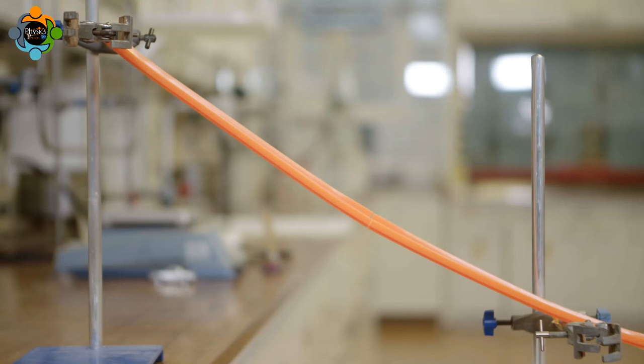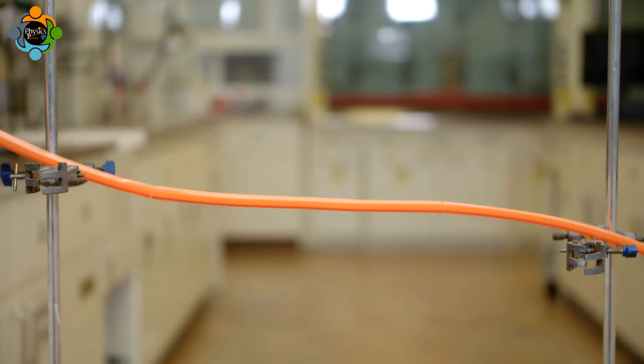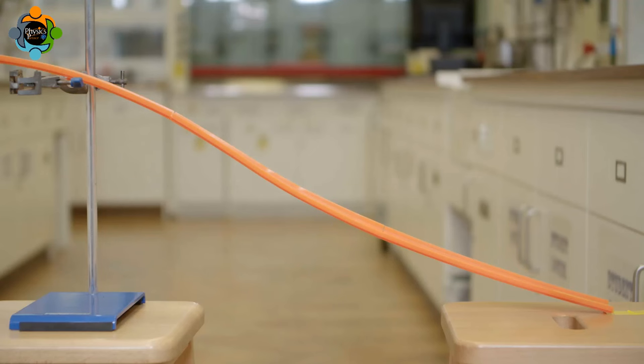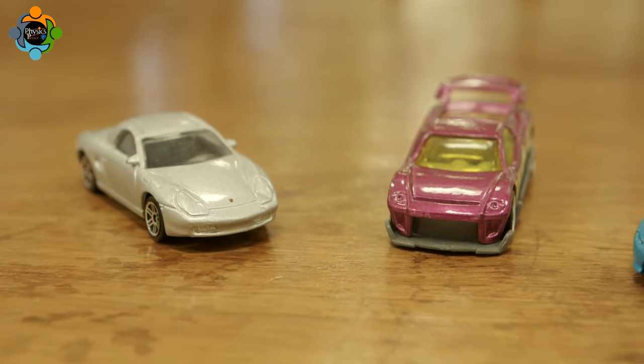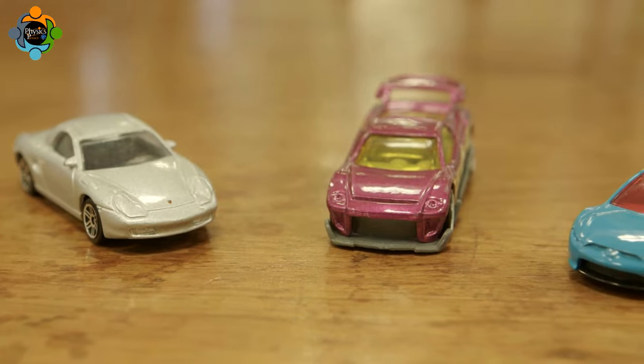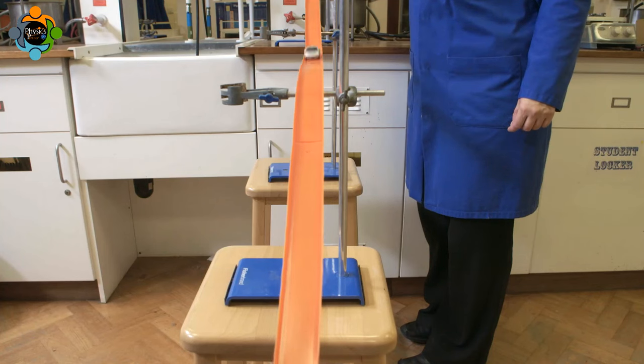The track is set up with four main sections. Clamps and stands are used to secure the first slope. A flat section is followed by another steeper slope. The end of the track rests on the stool. To check that there is nothing to impede the path of the car, it is run along the track.